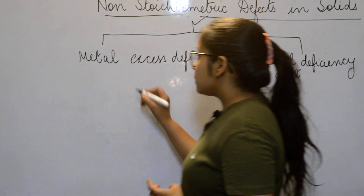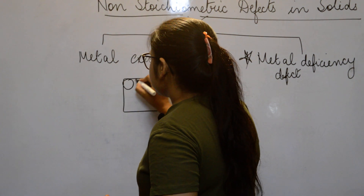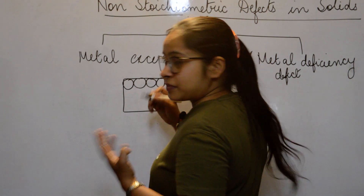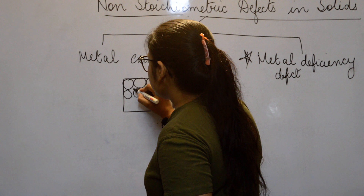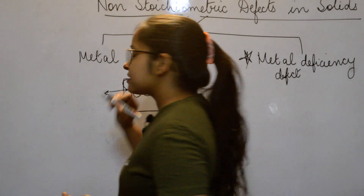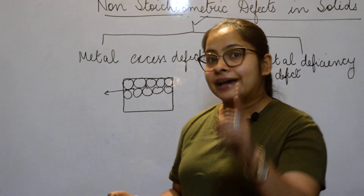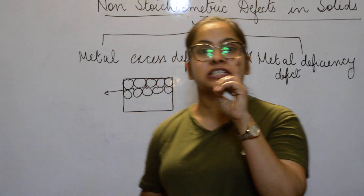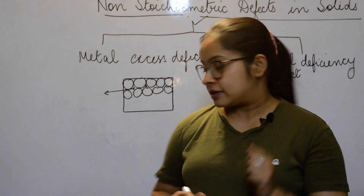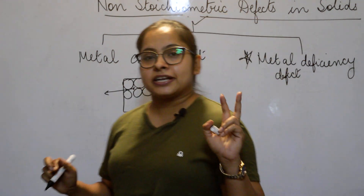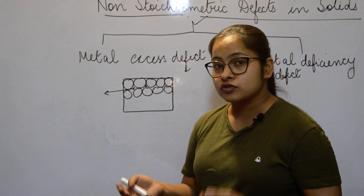As I told you in the previous video, whenever any solid crystal is arranged, in the centre you will see some vacant spaces — we call these interstitial spaces. Sometimes a cation sits in these interstitial sites. So the two reasons for metal excess defect are: anionic vacancies, and cations present in interstitial sites.